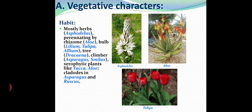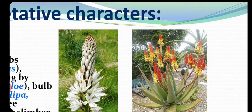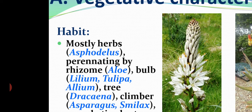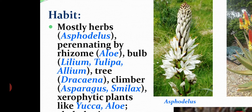First we will discuss vegetative characters, then floral characters. Regarding habitat, this family consists mostly of herbaceous plants with fibrous roots persisting from season to season by means of underground stems or rhizomes. One example is Asphodilus, which is not very common to our area but is a beautiful Liliaceae family member showing beautiful flowers.